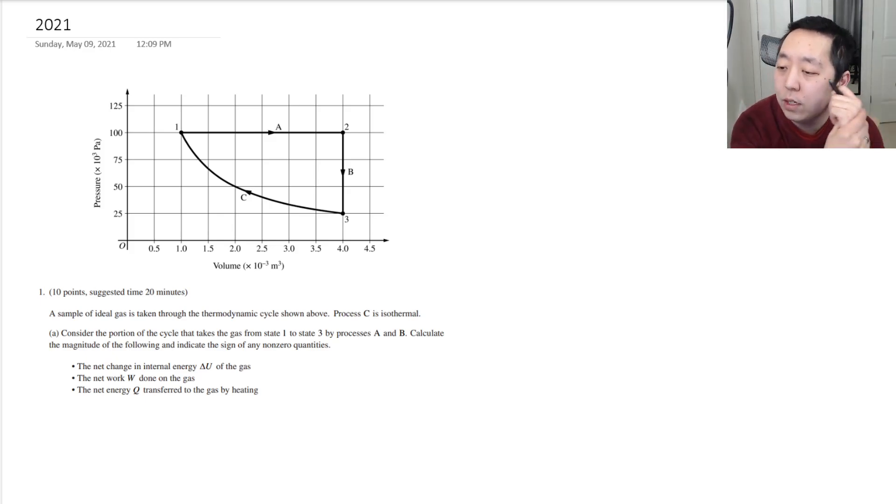Number one, a sample of ideal gas is taken through a thermodynamic cycle as shown above. Process C is isothermal. Consider the portion of the cycle that takes the gas from state 1 to state 3 by processes A and B and calculate the magnitude of the following and indicate the sign of any non-zero quantities: the net change in the internal energy, the net work done on the gas, the net energy transferred to the gas by heating.